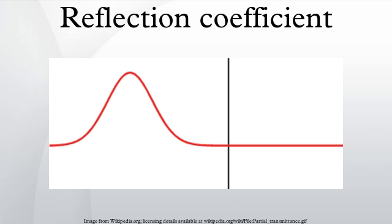In optics and electromagnetics in general, reflection coefficient can refer to either the amplitude reflection coefficient described here, or the reflectance, depending on context. Typically, the reflectance is represented by a capital R, while the amplitude reflection coefficient is represented by a lower case r.